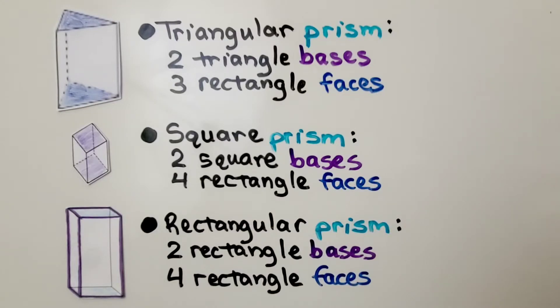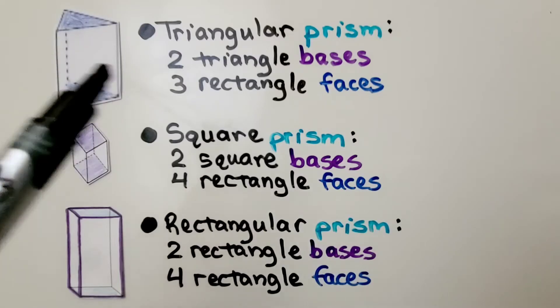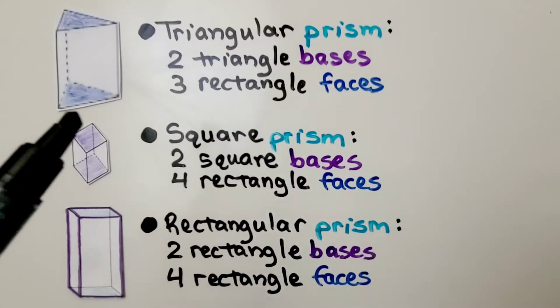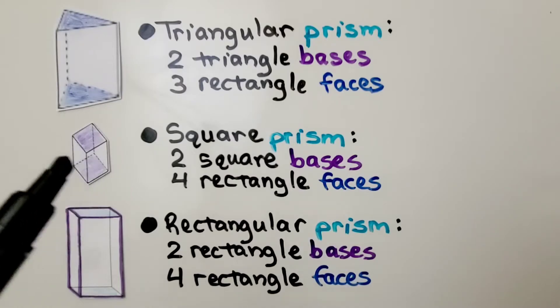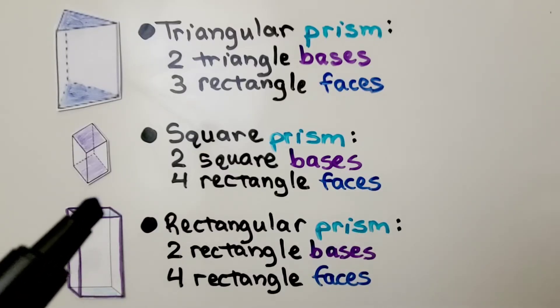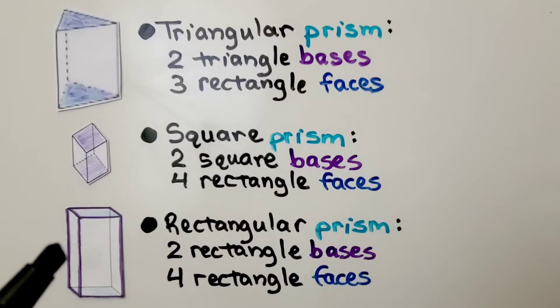A triangular prism has two triangular bases and three rectangle faces. A square prism has two square bases and four rectangle faces. A rectangular prism has six rectangle faces. It's got two rectangle bases and four rectangle faces. That's six rectangles altogether.